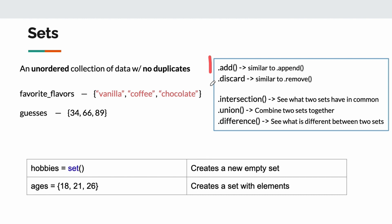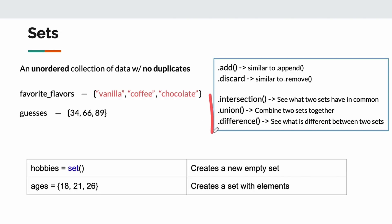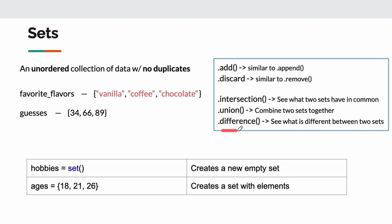A set functions kind of the same way as a list, but remember a list had append and remove — in a set we have add and discard. They work the exact same way. The other three unique methods are quite powerful. We have intersection — this basically creates a new set using what two different sets have in common. We have union — you might as well call it combine, because that's what it does; it combines two sets, with no duplicate values. And the final one is difference — this will create a set based on what is different between two sets. Practice this and think of what you can do with it.